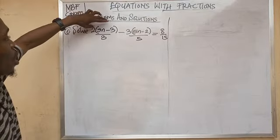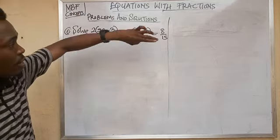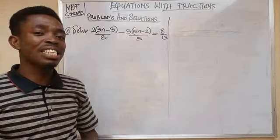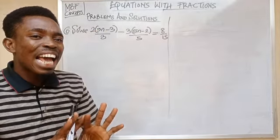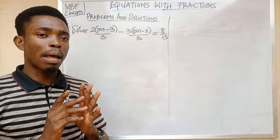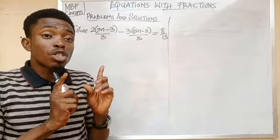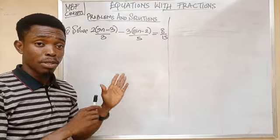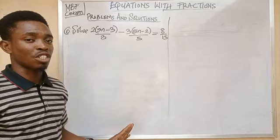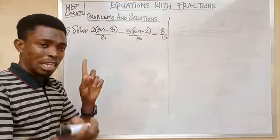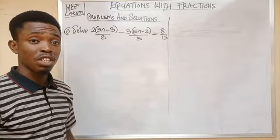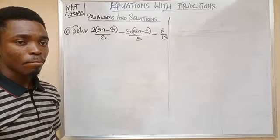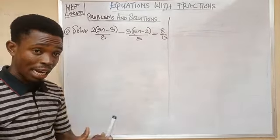At the numerators we have equations with brackets, and the whole question is an equation with fractions. There are two ways to approach this, but in this tutorial we will first remove the brackets, and then clear the fractions afterwards.